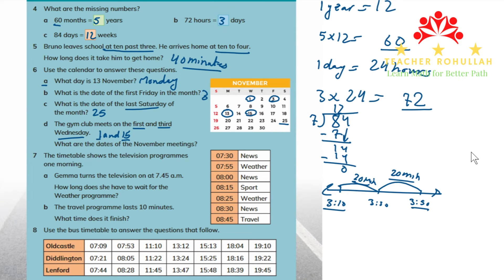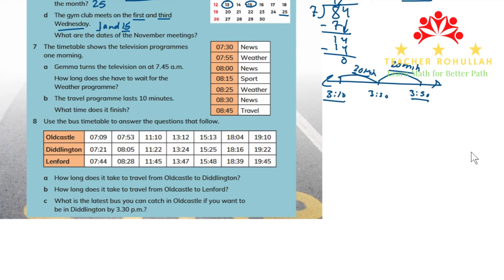In question seven, it says: the timetable shows television programs one morning. We have parts A and B to answer based on this television timetable. In part A, Gima turns the television on at 7:45 a.m. How long does she have to wait for the weather program?